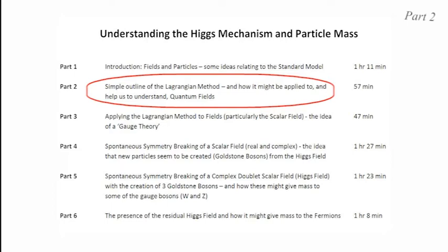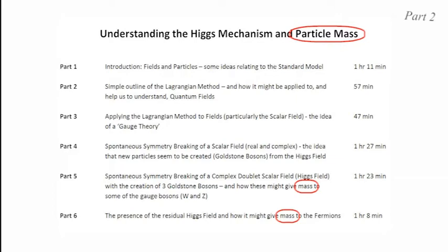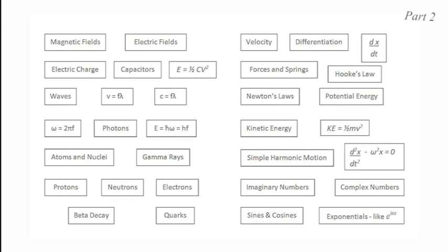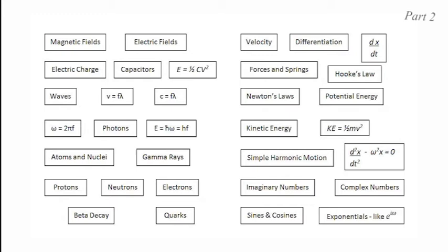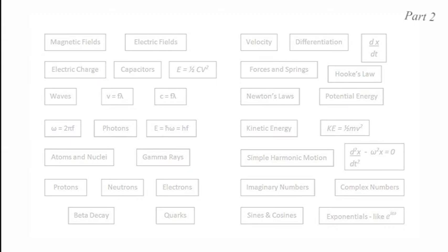This is the second in a series of six videos which try to explain something of the Higgs field and the way in which it can give mass to the known elementary particles of nature. Someone who studied mathematics and physics to around the age of 20, or who is reasonably familiar with most of the ideas shown here, should be able to work through the arguments presented in the six videos so that they have some grasp of the sophisticated concepts involved without having cut too many corners.